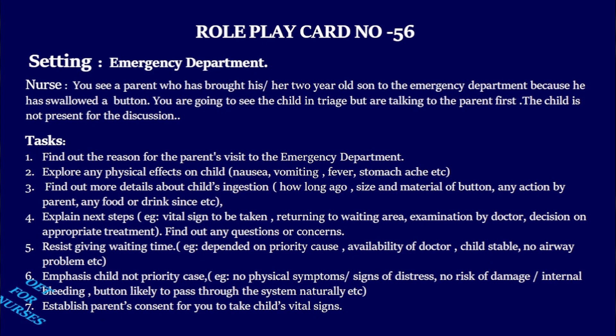Further tasks: find out any action taken by the parent and any food or drink since the incident. Explain the next steps — vital signs to be taken, returning to the waiting area, examination by the doctor, and decision on appropriate treatment. Ask about any questions or concerns. Resist giving a waiting time, as it depends on priority, availability of the doctor, and the child's status — no airway problems. Emphasize the child is not a priority case: no physical symptoms, no signs of distress, no risk of internal damage or bleeding, and the button is likely to pass through naturally. Finally, establish the patient's consent for you to take the child's vital signs.